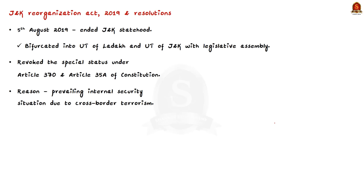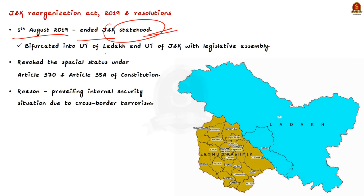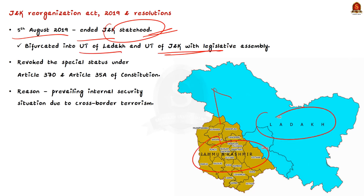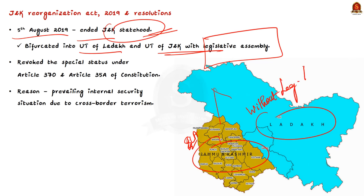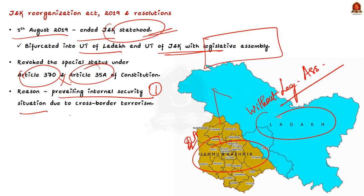On 5th August 2019, this legislation put an end to the statehood of Jammu and Kashmir, splitting the state into two Union Territories — Union Territory of Ladakh and Union Territory of Jammu and Kashmir. Jammu and Kashmir has a legislative assembly, but Ladakh is a Union Territory without a legislative assembly. Along with the legislation, two resolutions were passed that withdrew the special status of Jammu and Kashmir under Article 370 and Article 35A of the Indian Constitution. One of the major reasons for this move was the prevailing internal security situation worsening due to cross-border terrorism.